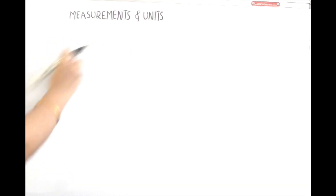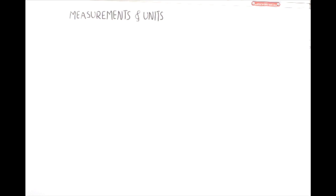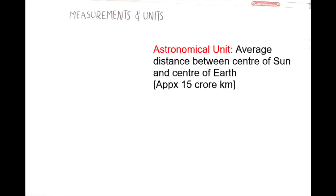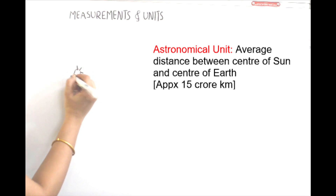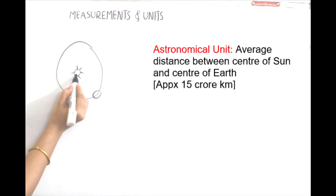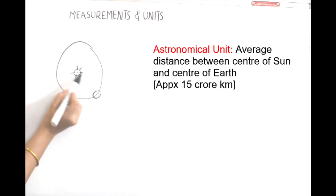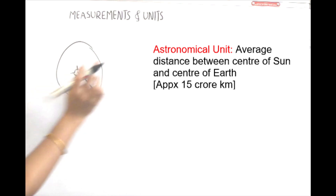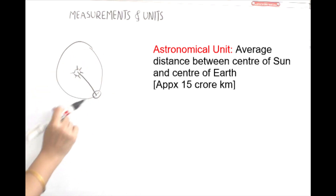We can measure the distance between one kilometer. In this area, we can measure the distance between two kilometers. Here is the sun. This is the orbit. The sun is called the astronomical unit. This is the astronomical unit — here is the average distance.